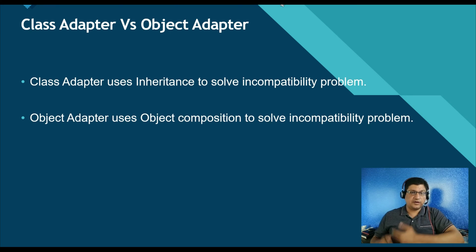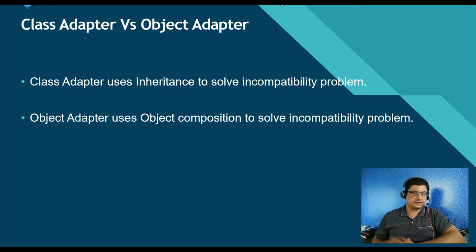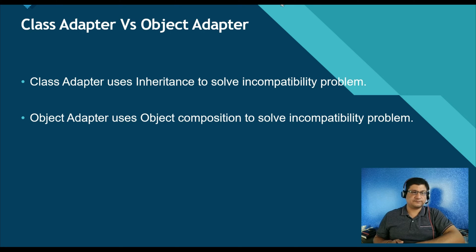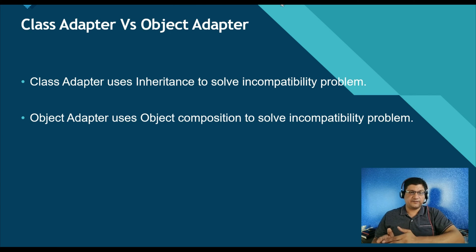In simple terms, the adapter pattern solves the problem either by using inheritance or by using object composition. We call these the class adapter or the object adapter. Using this trick, the adapter pattern makes programming easier by allowing unrelated classes to work together in a single program. We write a class that has the desired interface and make it communicate with the class that has a different interface.